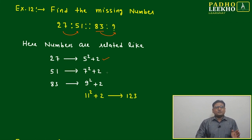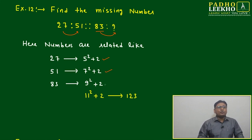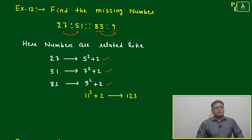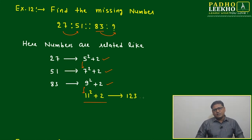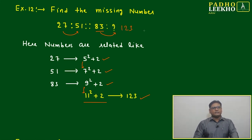51 - the nearby number is 49, that is also a perfect square. So 51 we can write as 7 square plus 2. 83 again follows 9 square plus 2. Then here 5 to 7, then here also 7 to 9. The next number will be 11 square plus 2, or we can say it is 123. 11 square is 121 plus 2, so 123 will be your missing number.